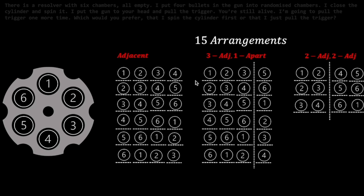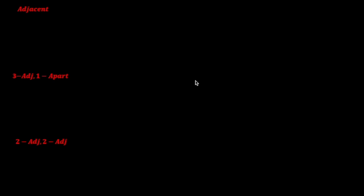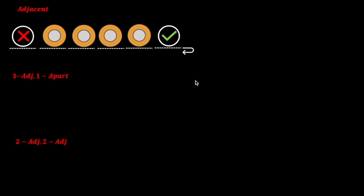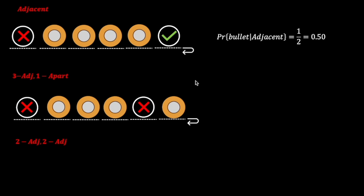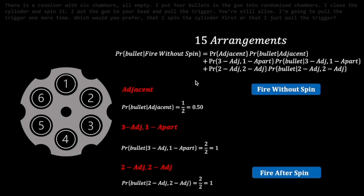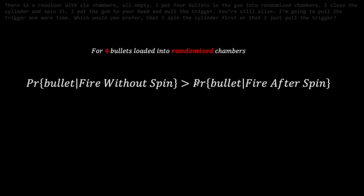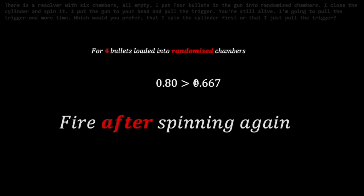The probability of encountering a bullet placed in four randomized chambers without a re-spin is again the sum product. For adjacent bullets, the first spin lands in two empty chambers; one will have a bullet coming up next, giving a probability of 1 over 2. For three adjacents and another separated by one chamber, all empty chambers will have a bullet coming up next, giving a conditional probability of 1. Similarly for the case of two pairs of adjacent bullets spaced one apart. The total probability without re-spin is 4 over 5, or 0.8. With a re-spin, it is four bullets out of six chambers, or 0.667. Since the former is higher, the candidate should fire after a re-spin.